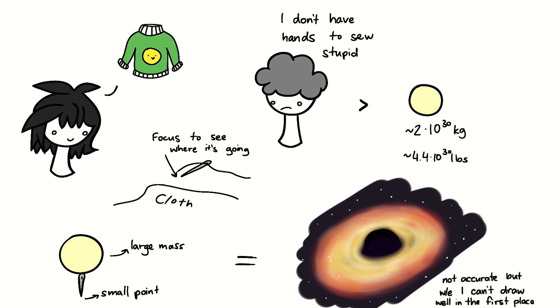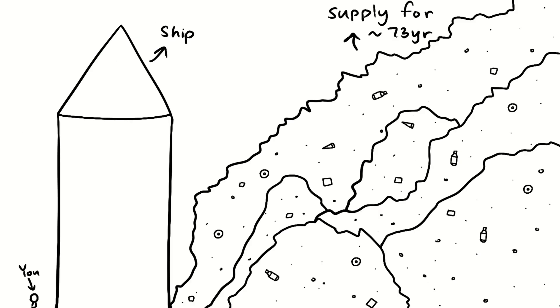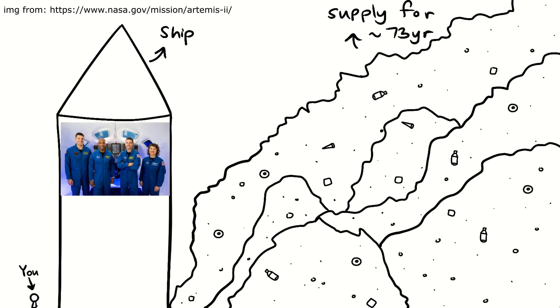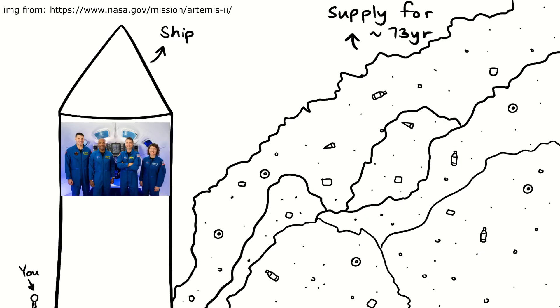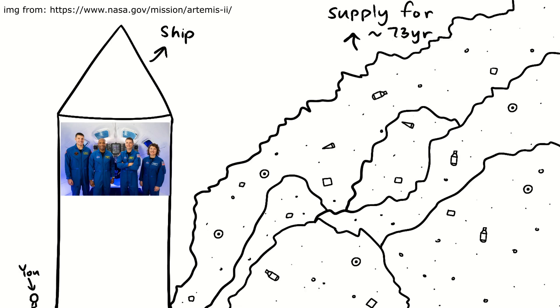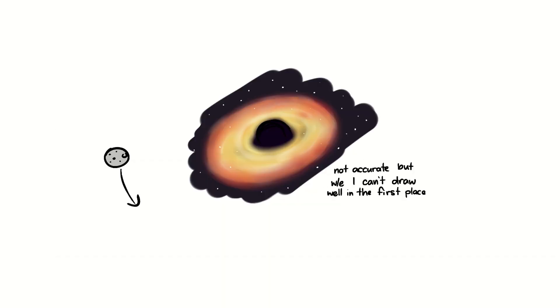So before your mom begins sewing, you're going to need a rocket ship that will take you far from the Earth. You'll need to somehow sneak onto the Artemis 2 with enough supplies to last the rest of your life. The moon will likely still orbit the newly formed black hole, while the Earth would be dangerously close or even fall into the event horizon.